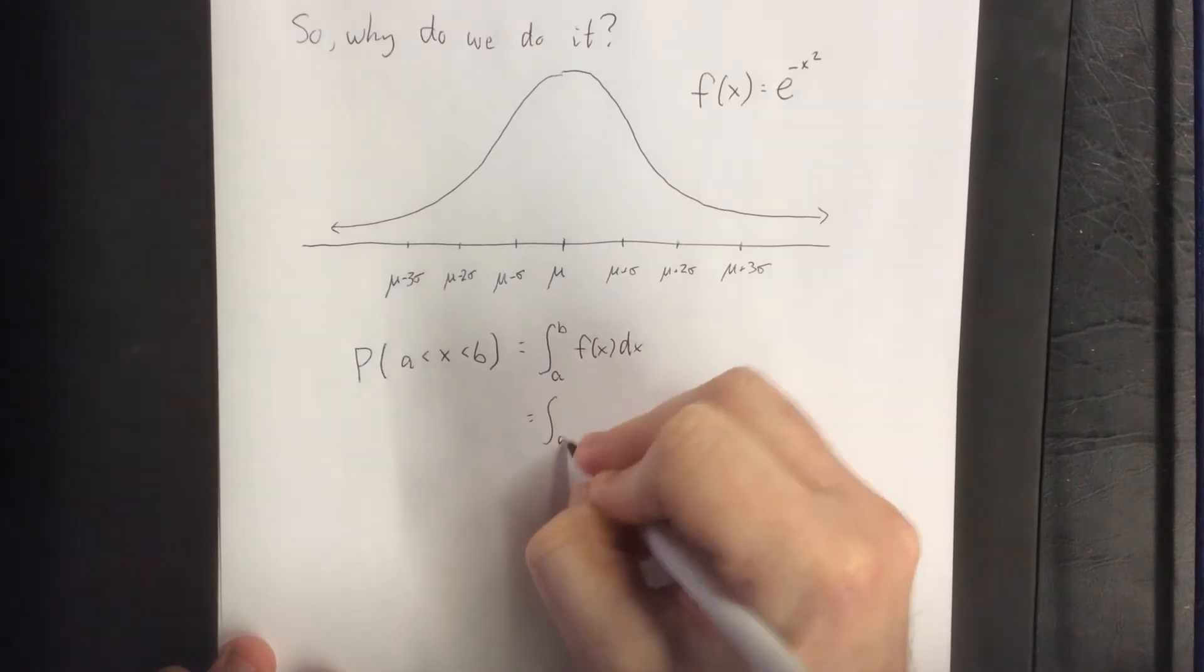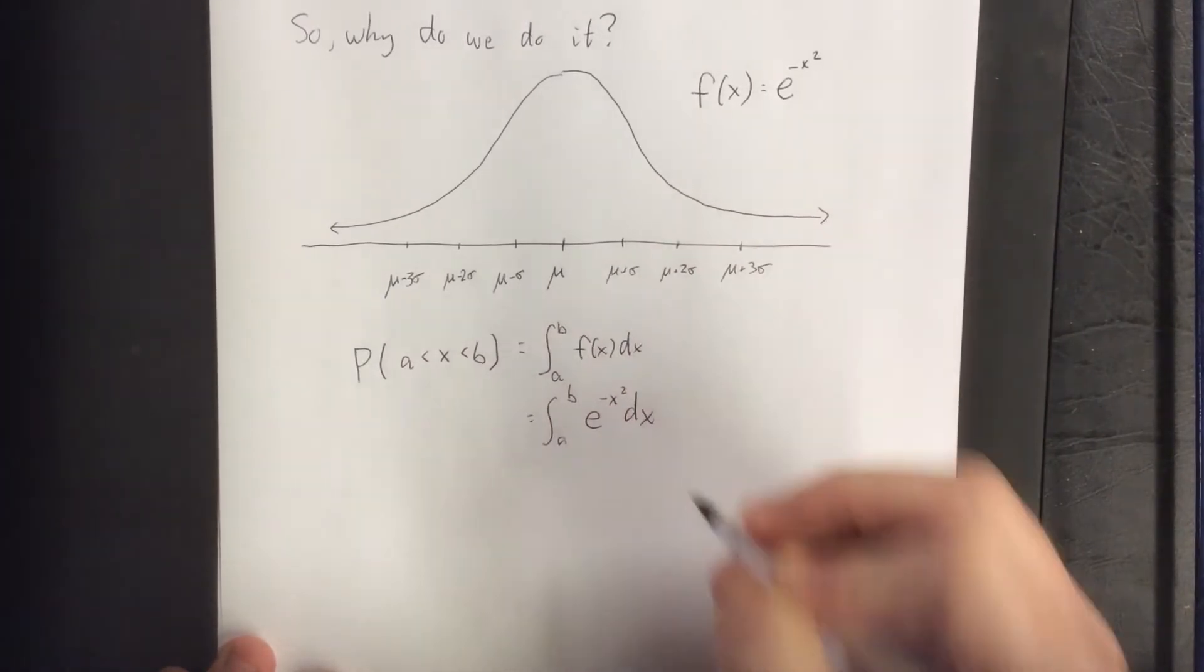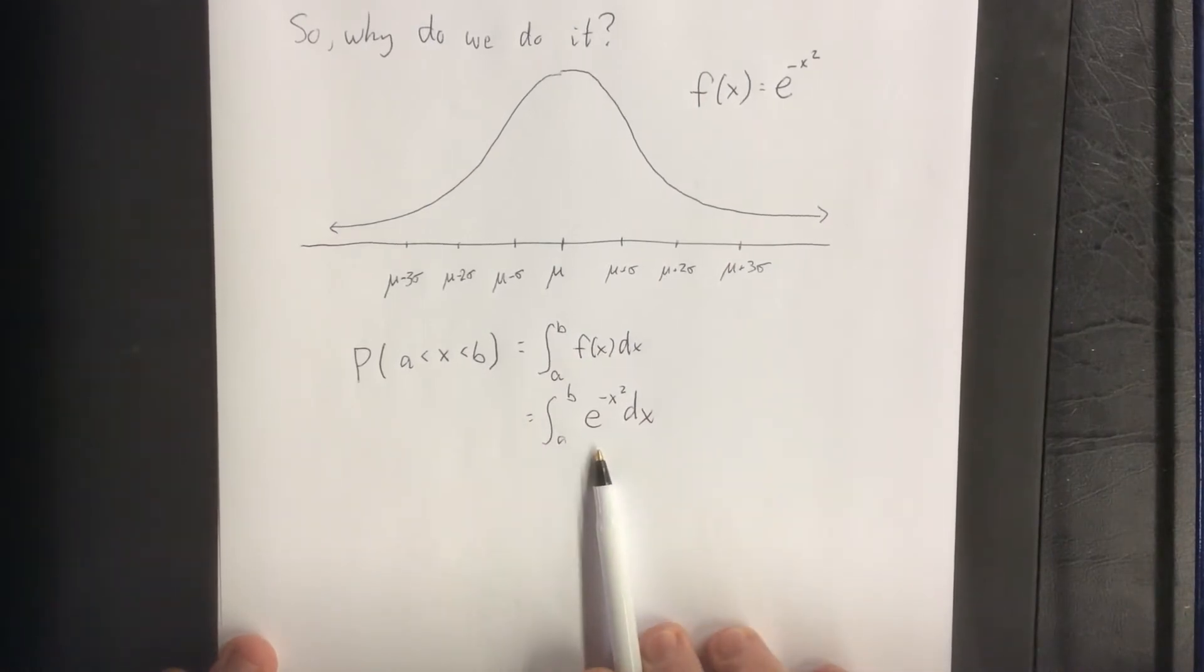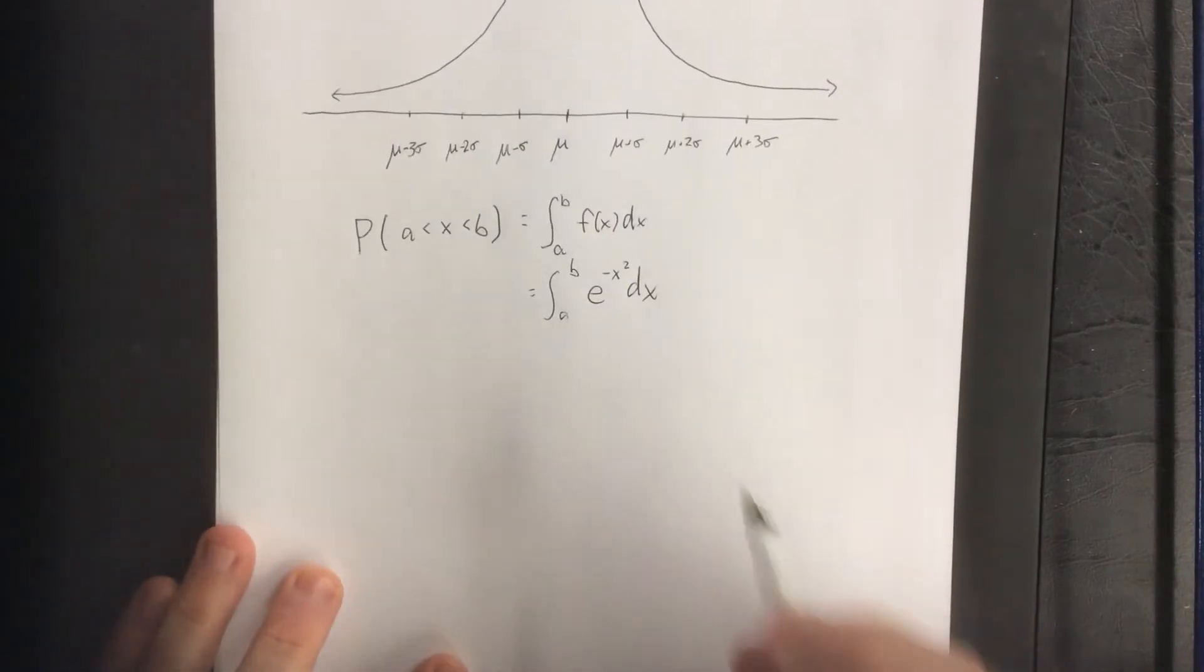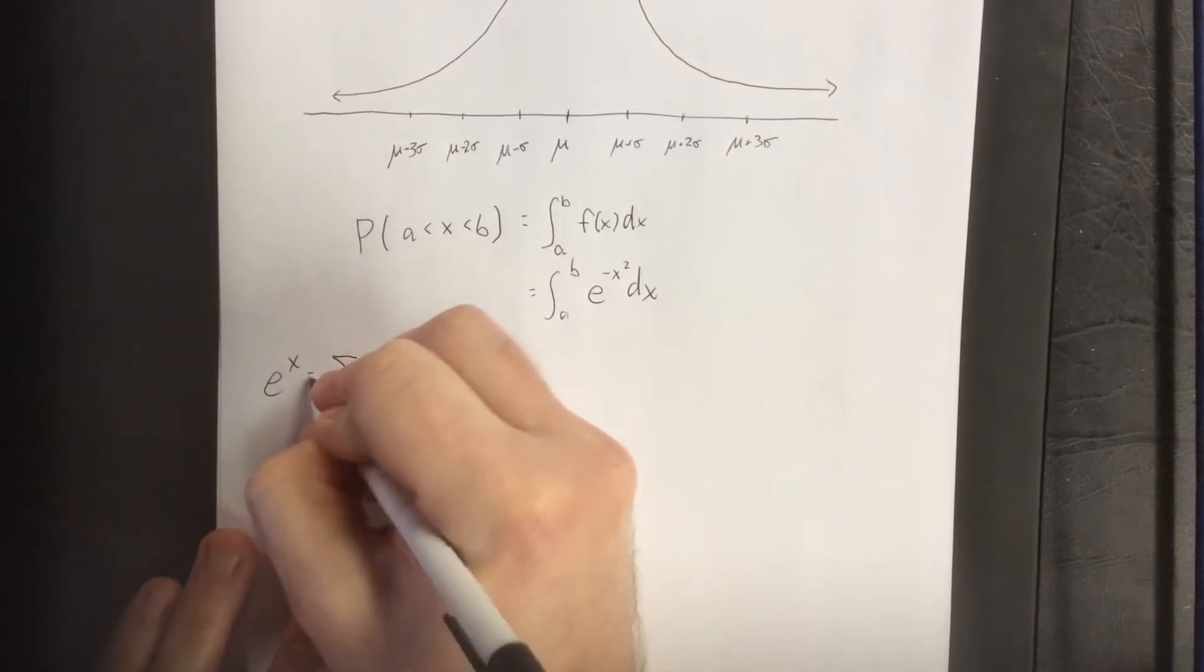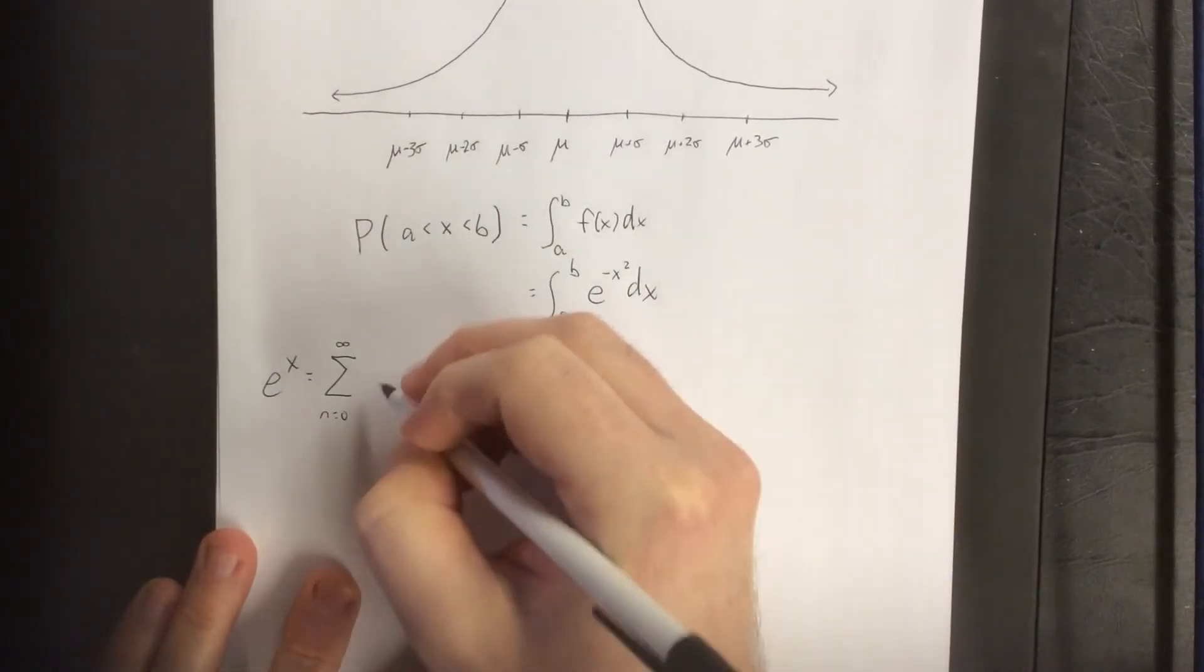Now in our case, we're talking about integrating e to the negative x squared dx. There is no closed form of the antiderivative of e to the negative x squared. However, through the use of a McLaurin series, it's possible to at least make this more reasonable.